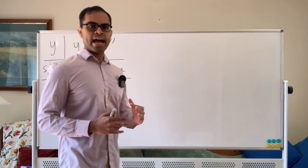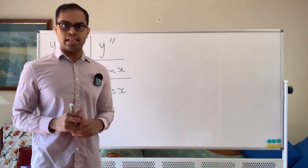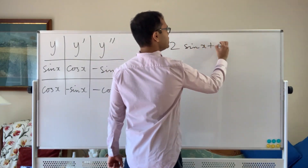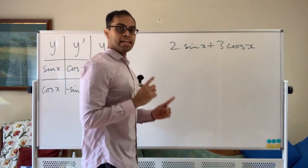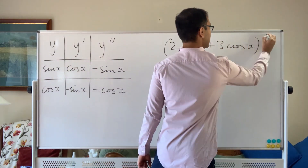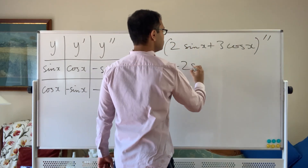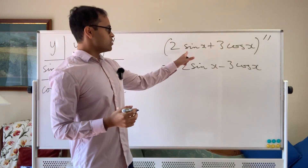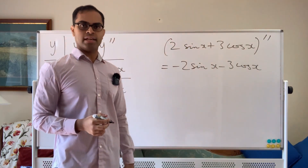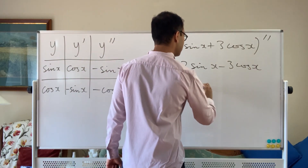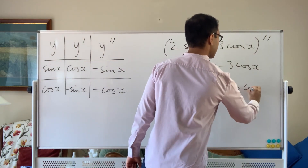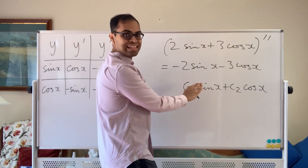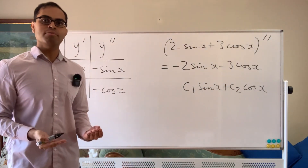The first observation is that you can find combinations of sine and cosine that still have the property. For example, you can write down something like 2 times sine x plus 3 times cosine x. If you take its second derivative, because constants come out when you differentiate, you get back minus 2 times sine x minus 3 times cosine x, which is nothing other than the negative of the function we started with. In general, a constant multiple of sine x plus a constant multiple of cosine x will have the property that its second derivative equals negative of itself. These are called linear combinations of sine and cosine.